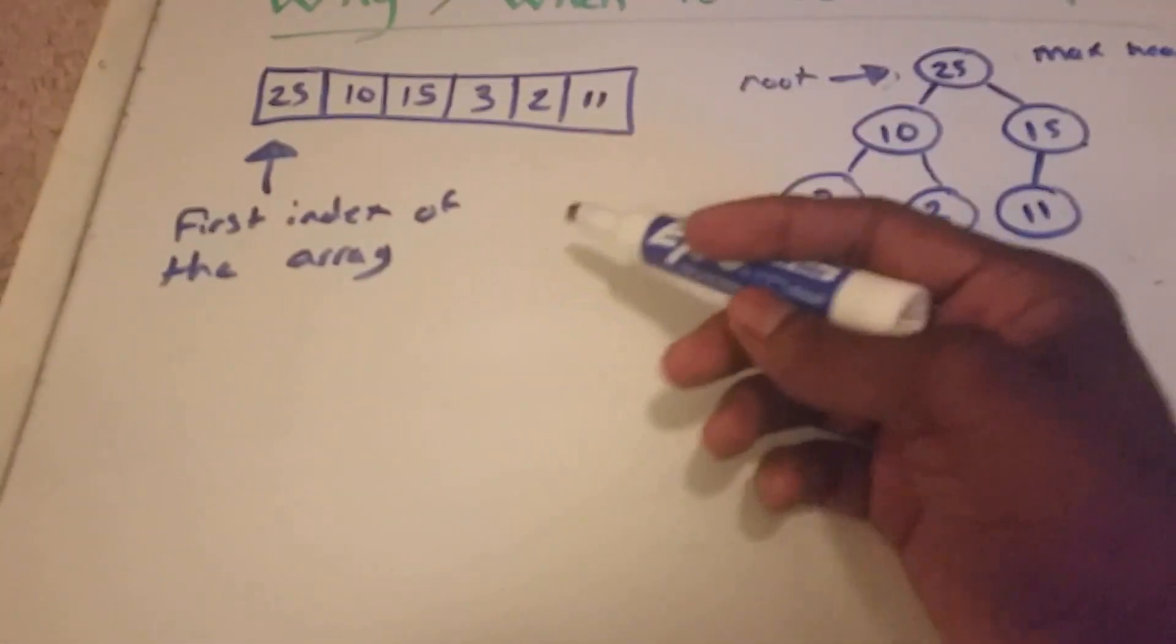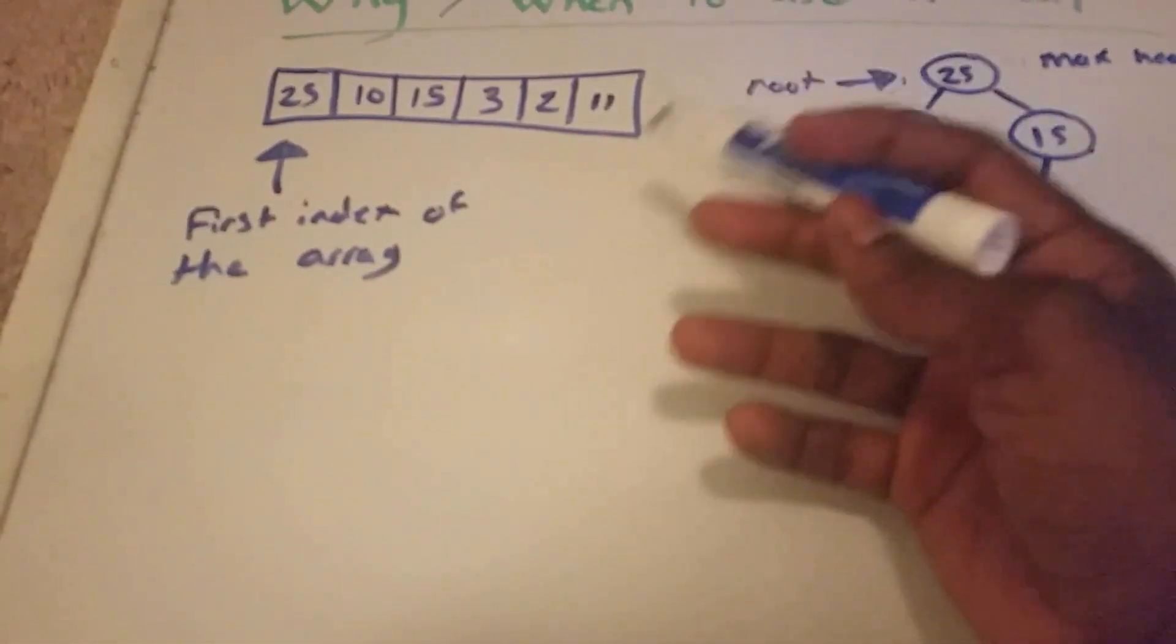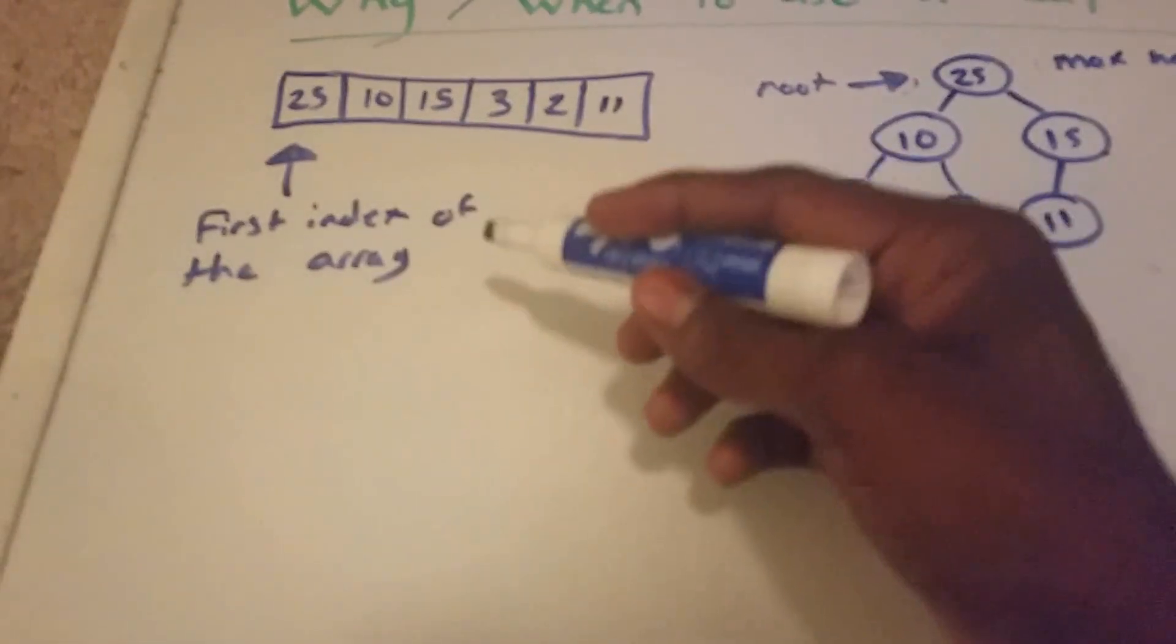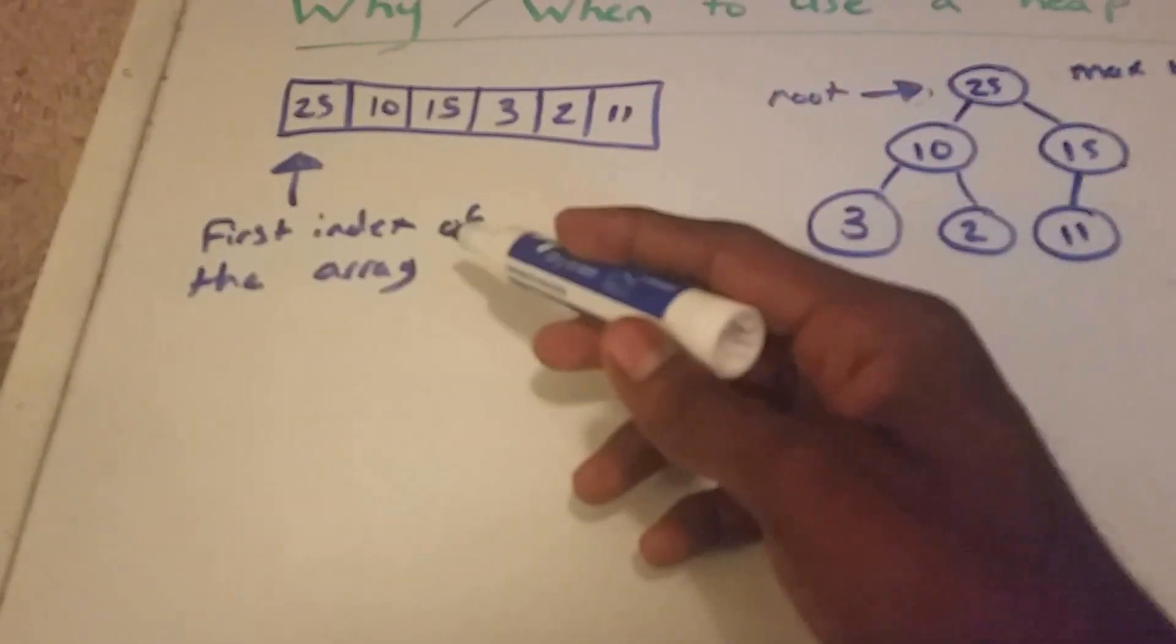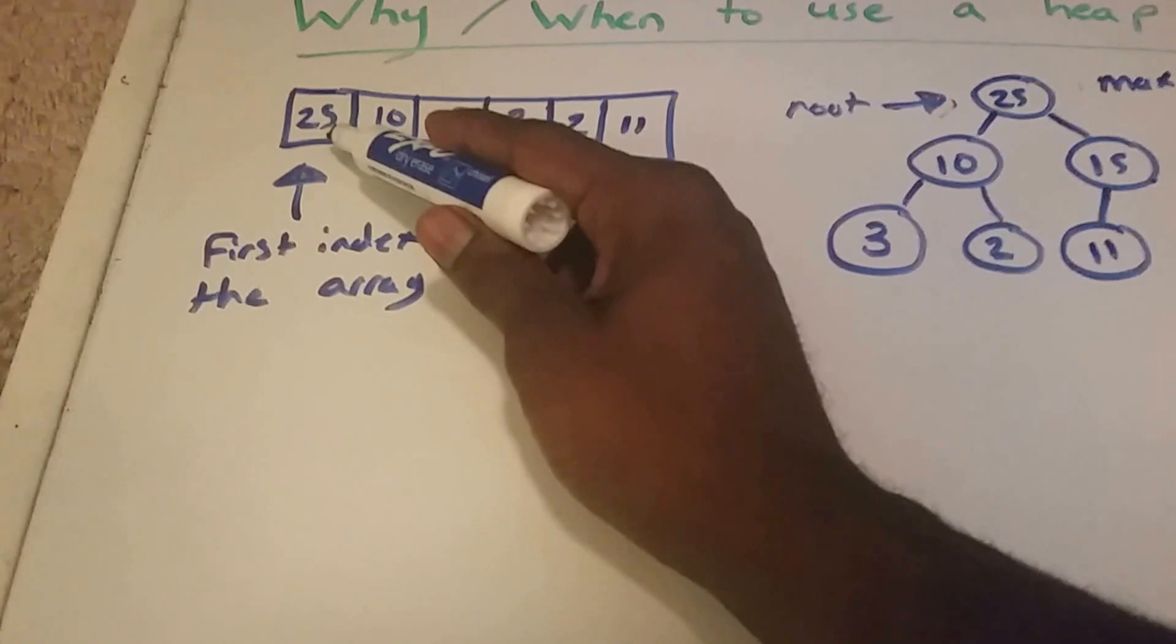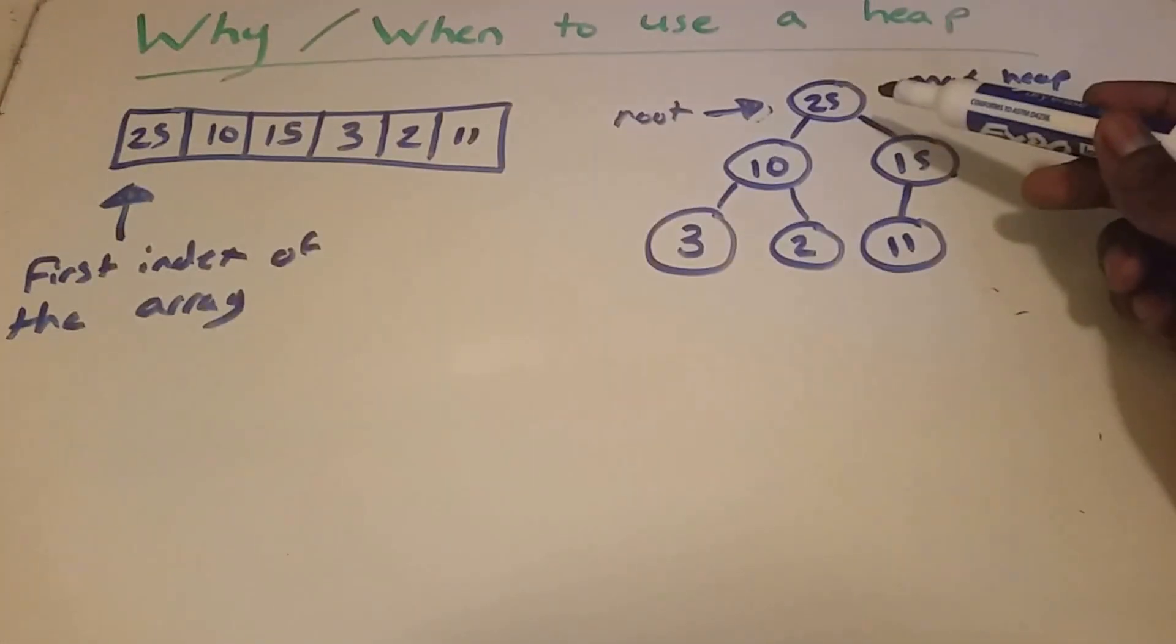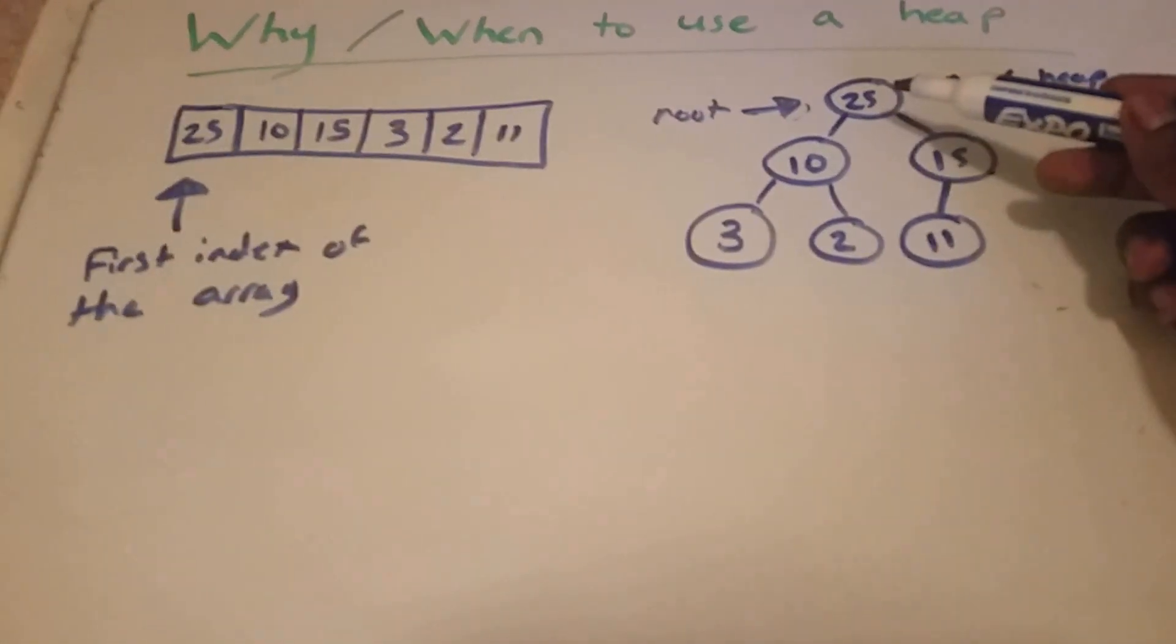And specifically, these both are max heaps, they're the same heap, just both represented in different data structures. So we know that the maximum value is always going to be at the start of the array, and the maximum value is going to always be at the root of the binary tree.